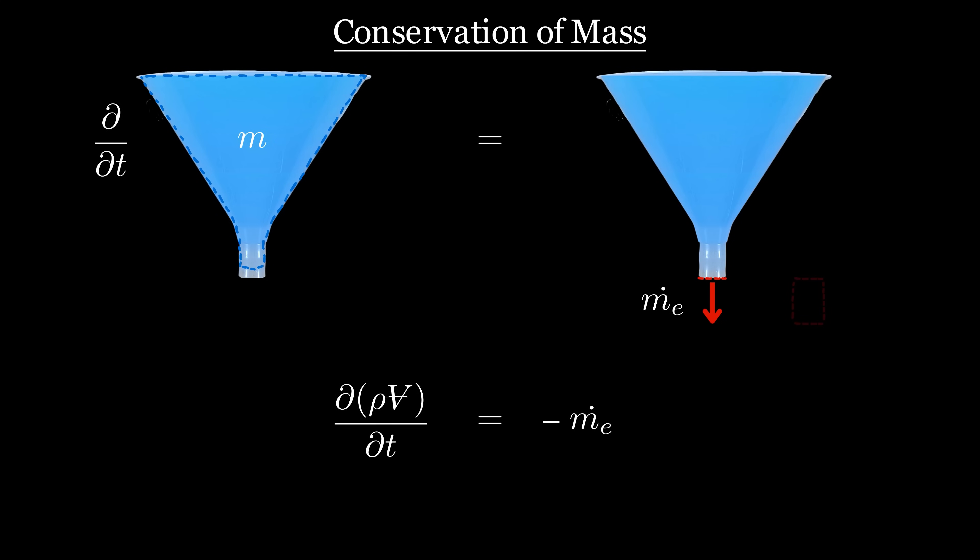Mass is just density times volume, and the mass flow rate is just density times the exit velocity times the exit area. Since we'll assume water is incompressible, the density is a constant that can be cancelled on both sides.